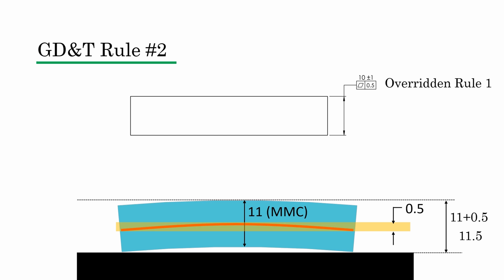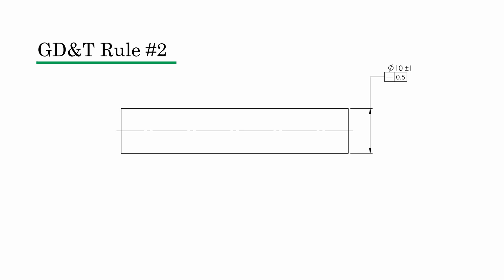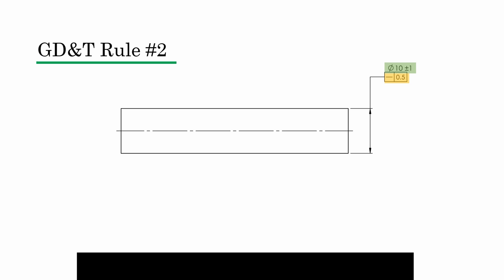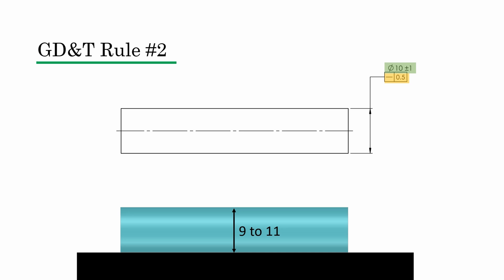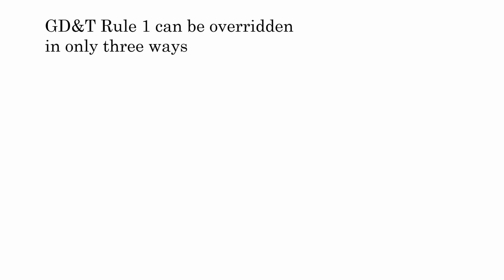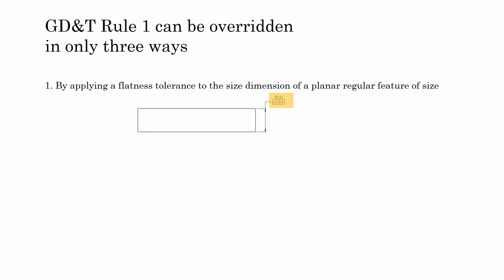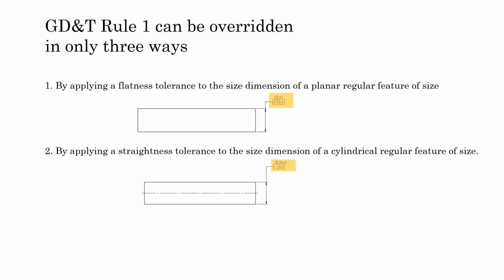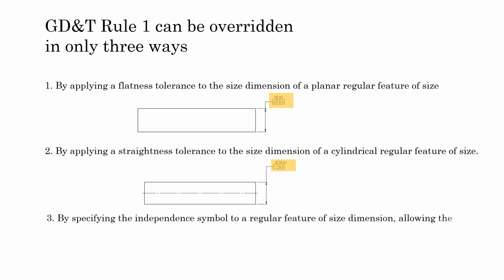The same applies to straightness control. For a shaft of diameter 10 plus minus 1 mm with a straightness tolerance of 0.5 mm applied to the size dimension, the shaft can range from 9 mm to 11 mm, and even at MMC of 11 mm it can have a straightness variation of up to 0.5 mm, making the envelope boundary 11.5 mm. In summary, GD&T rule 1 can be overridden in three ways: 1) applying a flatness tolerance to the size dimension of a planar regular feature of size; 2) applying a straightness tolerance to the dimension of a cylindrical regular feature of size; 3) specifying the independency symbol on the regular feature of size dimension.